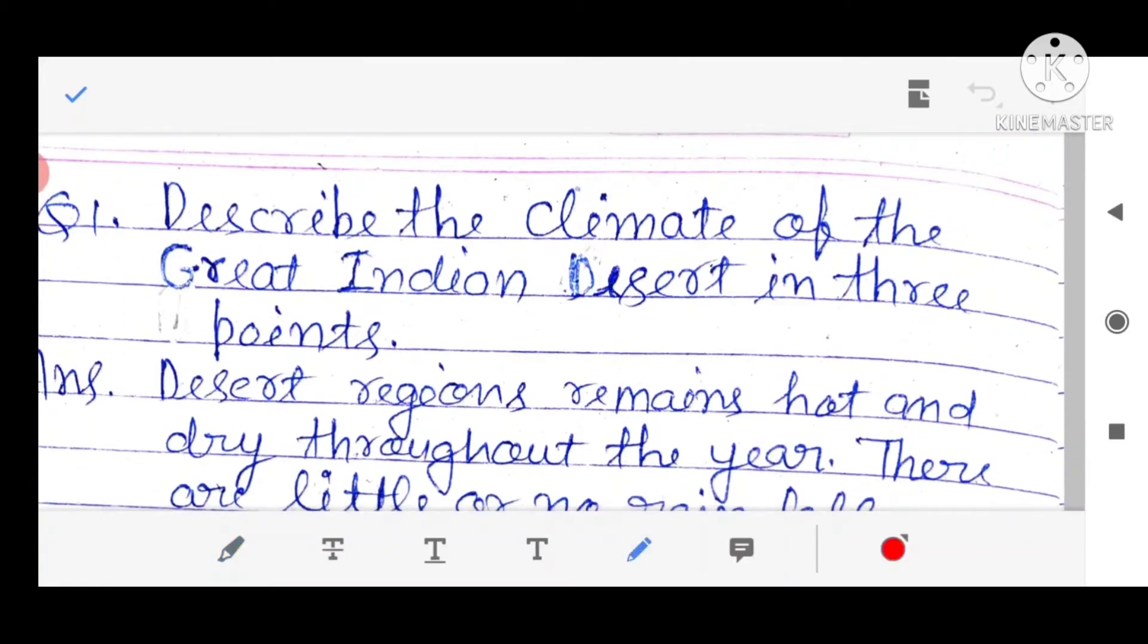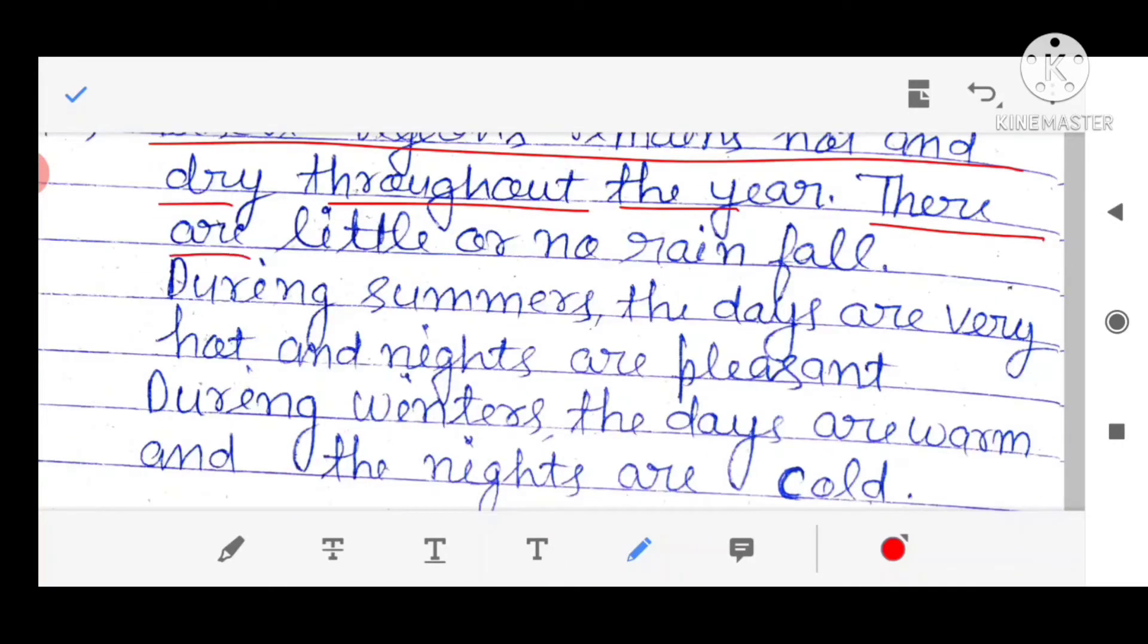Question 1. Describe the climate of the Great Indian Desert in three points. Desert regions remain hot and dry throughout the year. There is little or no rainfall.